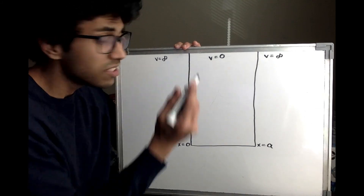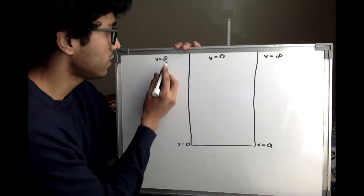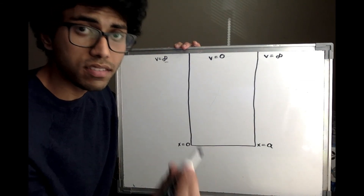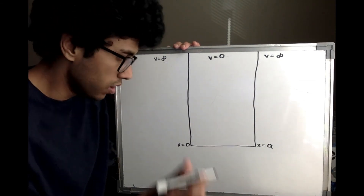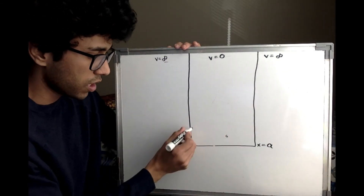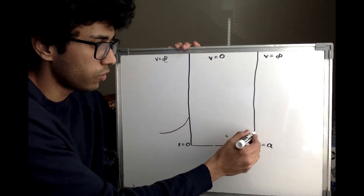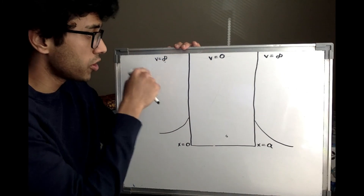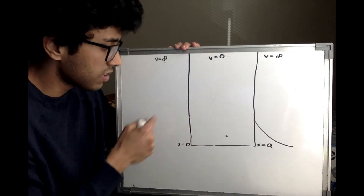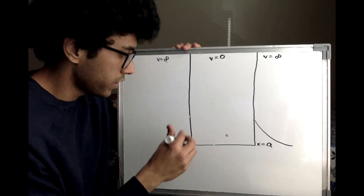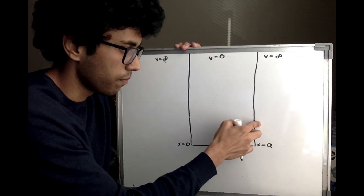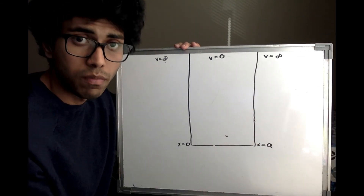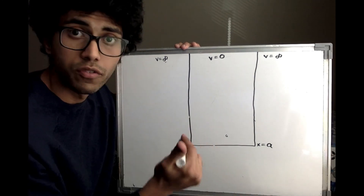Before we proceed, let me remind you that in reality the potential is never truly infinite. There is always some large but finite potential, and in that case you always have some exponentially decreasing probability to find the particle outside the box. But in this problem we are assuming the potential is perfectly infinite, so there is absolutely no probability to find the particle outside the box. That's how we will quantize the energy in this first problem.